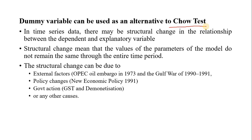By structural change, we mean that the parameters of a model do not remain the same throughout the entire period. Suppose we are checking a relationship for one hundred years — in all these hundred years, the relationship may not hold and the coefficients may not be the same for all this period; the coefficients may shift. There are lots of internal and external, or endogenous and exogenous, reasons for this.